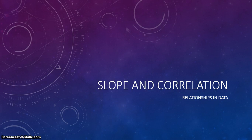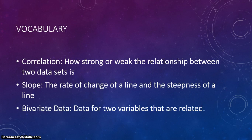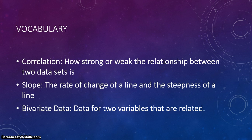Now we're going to learn the connection between slope and correlation. Correlation is the relationship between two data sets. The slope is the rate of change of the line and the steepness of the line. And bivariate data is data for two variables that are related.